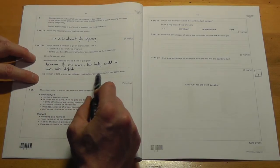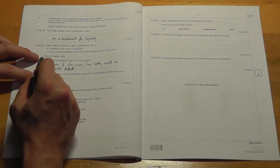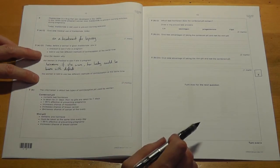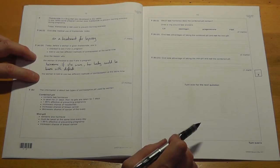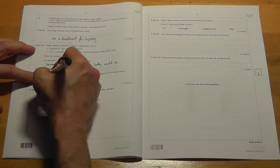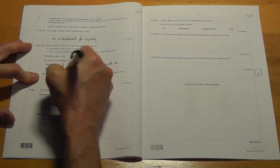The woman is told to use two different methods of contraception at the same time. Give the reason why. Well, if she's not pregnant when she starts taking the drug, it's really important she doesn't become pregnant. So the answer is to make sure she doesn't become pregnant.